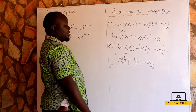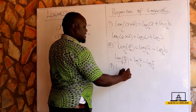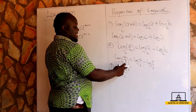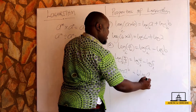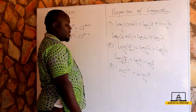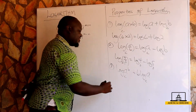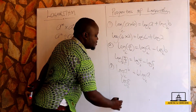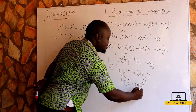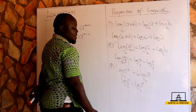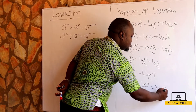The third property says that if we have log of a to the index b, all to the base c, where a has an index, this becomes b times log a to the base c — the index comes down to multiply. For example, log eight to the base two can be written as log two raised to the power three to the base two, because two raised to the power three is eight, which becomes three log two to the base two.